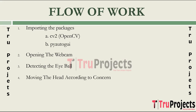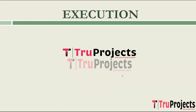Moving the head according to the concern: once the system has identified the user's eyes, it tracks the movement of the user's head to ensure accurate eye tracking. This includes adjusting the cursor's position based on the user's head orientation. Selecting the option by blinking the eyes: this module is the core of the project. It involves interpreting the user's eye movements such as blinking as input commands. For example, the system may register a blink as a click or select action, allowing users to interact with on-screen elements like buttons or menus.